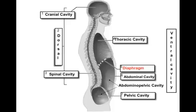Because the abdominal and pelvic cavities are not divided by any real structure they're often just referred to as the single abdominal pelvic cavity.